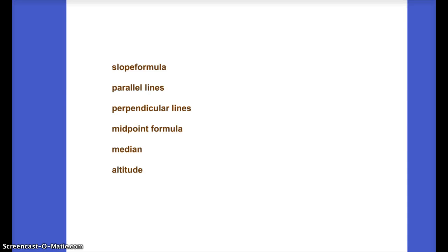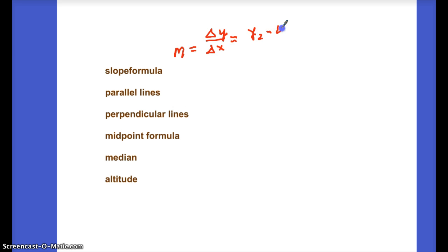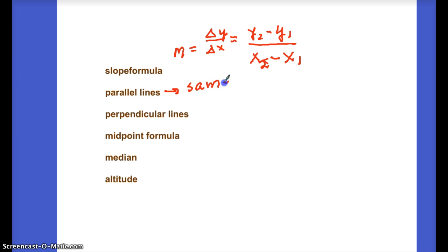Let's review a few formulas. The slope formula: m equals change in y over change in x, or (y₂ − y₁) over (x₂ − x₁). If two lines are parallel, they have the same slope. If two lines are perpendicular, their slopes are opposite reciprocals.